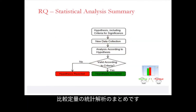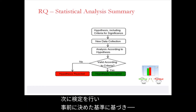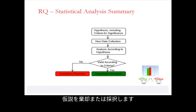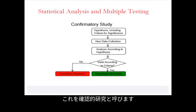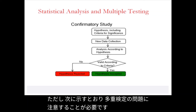To summarize statistical analysis for relative quantification: we start with a hypothesis, we collect data, then we perform tests and reject or accept the hypothesis based on predetermined criteria. We call this a confirmatory study. This kind of analysis is useful for expression analysis purposes as well, although we will need to watch out for multiple testing issues.